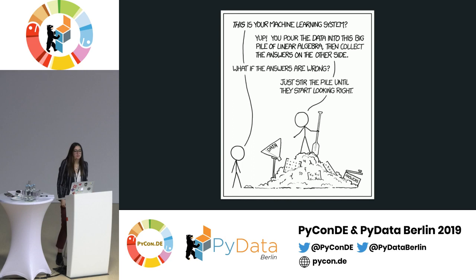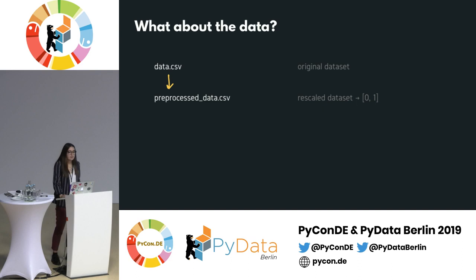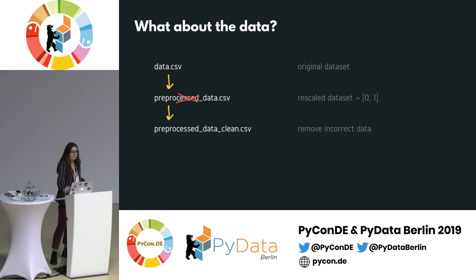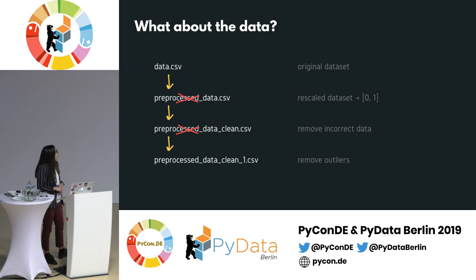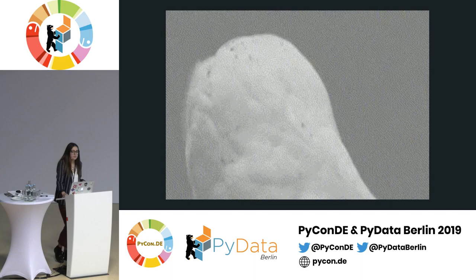But when it comes to data science, we know that not only the code is involved in the process — the data used to perform experiments plays a crucial role. Imagine this setting: you have a dataset, data.csv, with some numbers and metadata. You preprocess it by rescaling numbers to range 0 to 1, perform some checks, find incorrect data and remove them, then find some outliers and remove those too. It's a simple scenario, but if you're not careful, you could end up messing things up very easily.